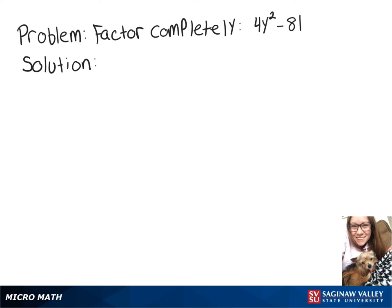In this video, we're going to factor 4y squared minus 81, and to do that, we're going to use the difference of squares formula, which says a squared minus b squared equals a plus b times a minus b.